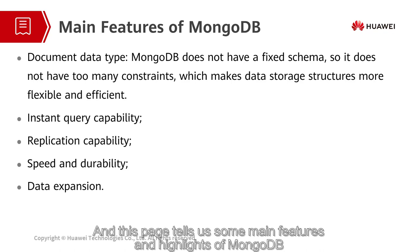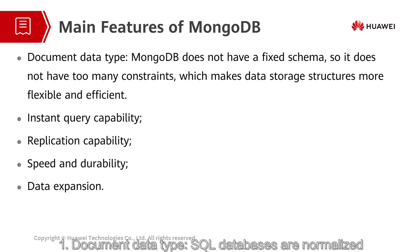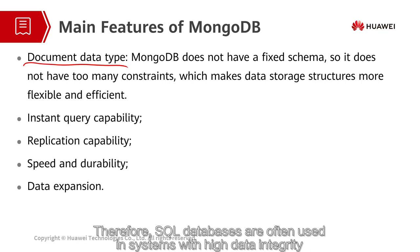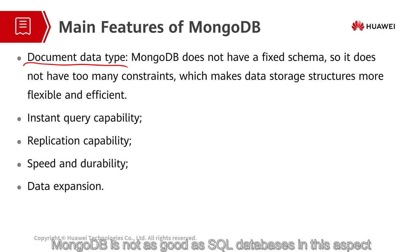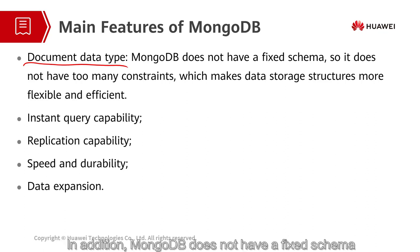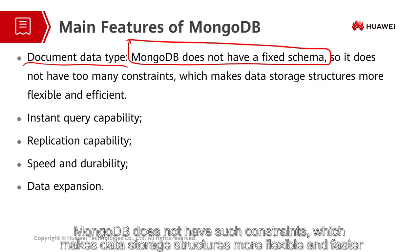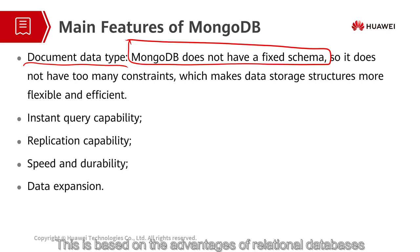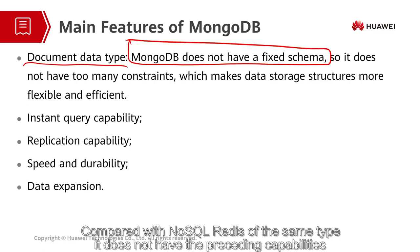This page tells us some main features and highlights of MongoDB. Firstly, document type: SQL databases are normalized, and data integrity and uniqueness can be ensured through the constraints of primary keys or foreign keys. Therefore, SQL databases are often used in systems with high data integrity, and MongoDB is not as good as SQL databases in this aspect. In addition, MongoDB does not have a fixed schema, which makes data storage structures more flexible and faster. Secondly, instant query capability: MongoDB retains the instant query capability of relational databases and the index capability. Compared with NoSQL Redis of the same type, Redis does not have these capabilities.